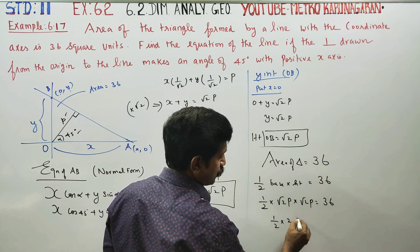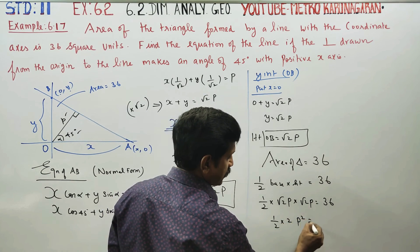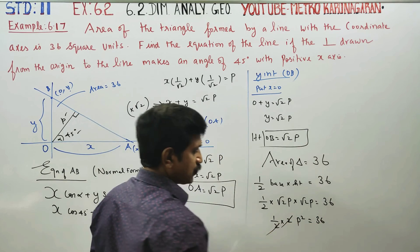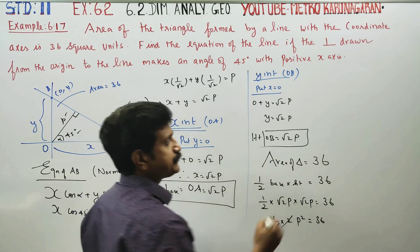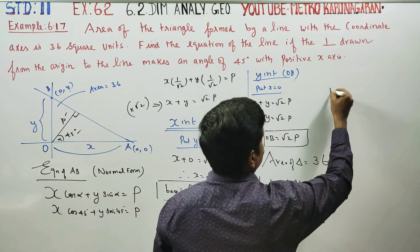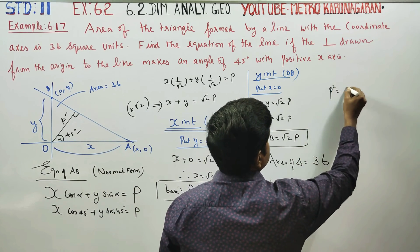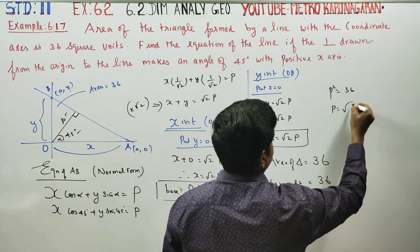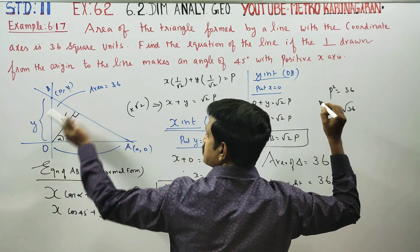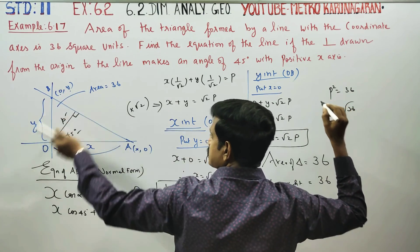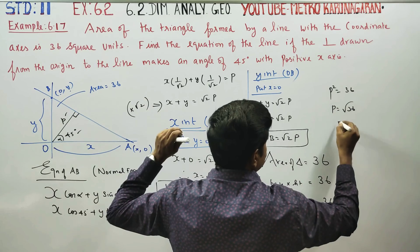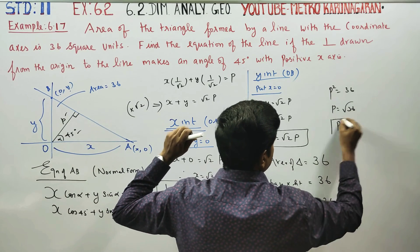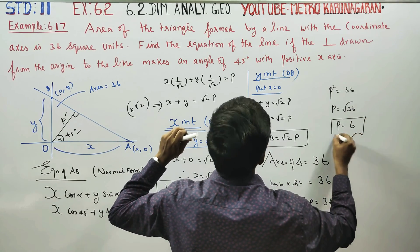That gives (1/2) × 2P² = 36. The 2 cancels, so P² = 36. Therefore P = √36. Since P is a distance, P is positive, so P = 6.